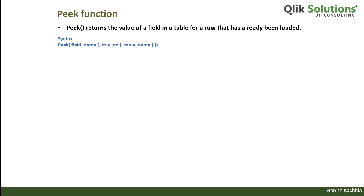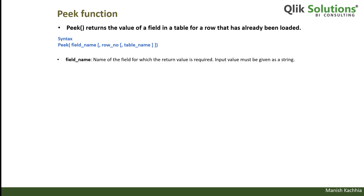We have seen that the PREVIOUS function takes only one parameter while the PIG function takes three parameters. The first one is the field name, and the next two — row number and table number — are optional.